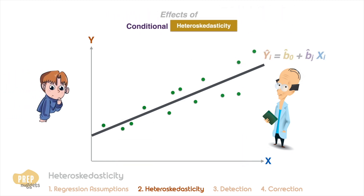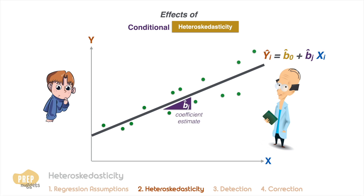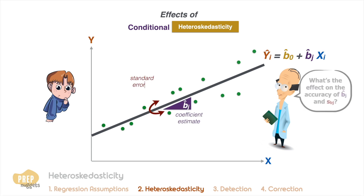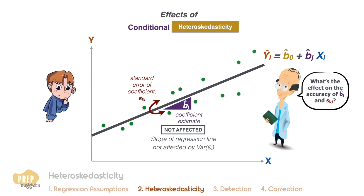Why so? Here's a chance for you to think critically. Given that the observations used in the regression exhibit conditional heteroscedasticity, how do you think it affects the accuracy of the estimates of the coefficient and the estimates of its standard error? Firstly, the coefficient estimate should not be affected by heteroscedasticity, because the slope of the regression line is not affected by the variance of the errors.